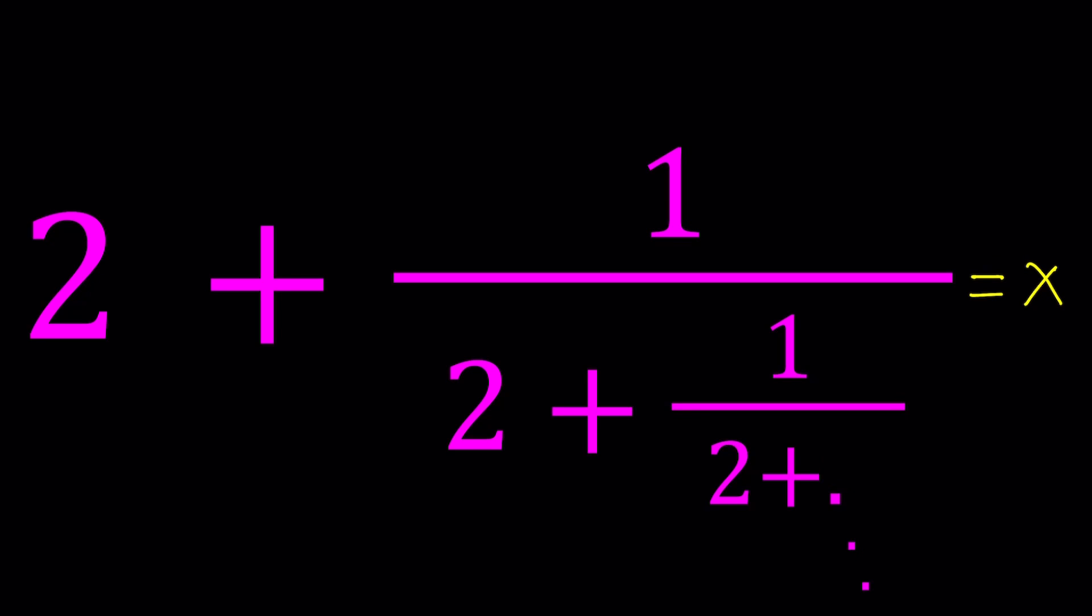Usually start by, if you have an infinite expression, could be a radical, could be a fraction like this, you set pretty much the whole thing equal to x, and then you try to find x again. Because these expressions contain themselves infinitely many times. And take a look. The denominator of this fraction is actually the same thing as the original. So if this whole thing is x, then this will also be x.